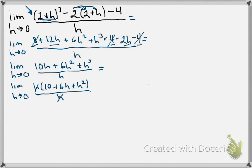So, now, via direct substitution, I will no longer get a 0 in the denominator, and I can plug in my h equals 0. So, I get 10 plus 6 times 0 plus 0 squared, which gives us a limit value of 10.